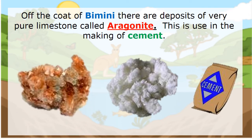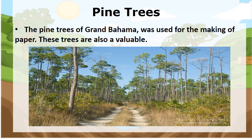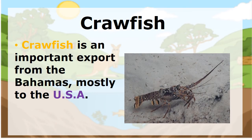That's aragonite, and that's the final product — cement. Pine trees of Grand Bahama were used for the making of paper; these trees are also a valuable resource. Our crawfish — some people may call it the spiny lobster — is an important export from the Bahamas, exported mostly to the United States.